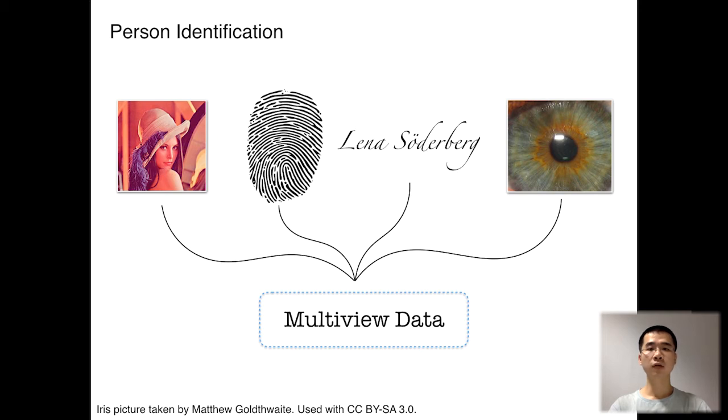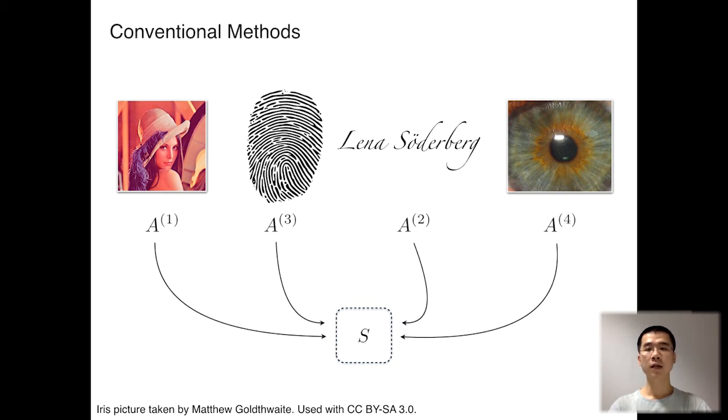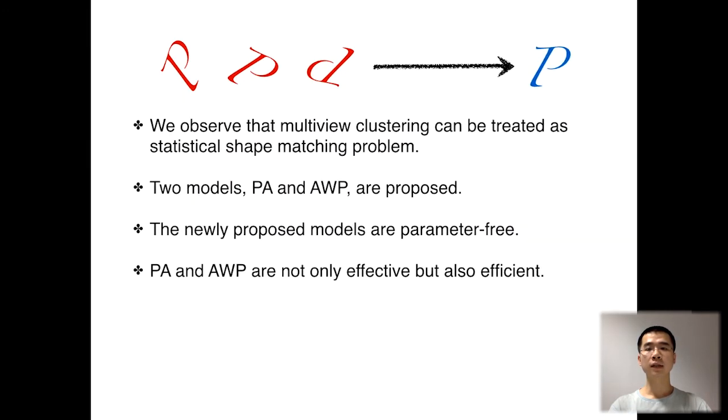Conventional multi-view clustering models build similarity graphs for every single view individually and learn a unified similarity graph from them. In this work, we observe that multi-view clustering can be treated as a statistical shape matching problem.